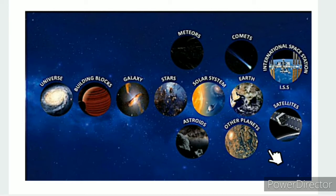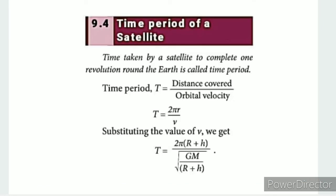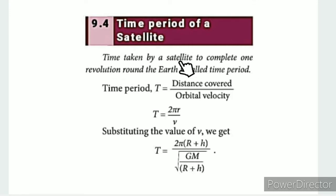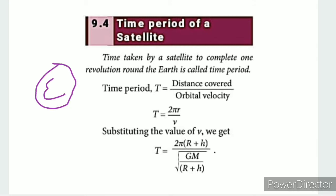We will calculate the time period of a satellite. Time period means the time taken by a satellite to complete one revolution around the Earth. This is called the time period. Now we will discuss the satellite.